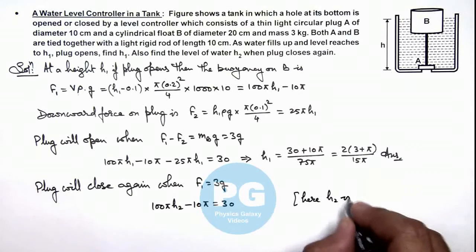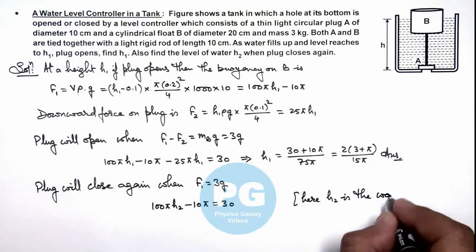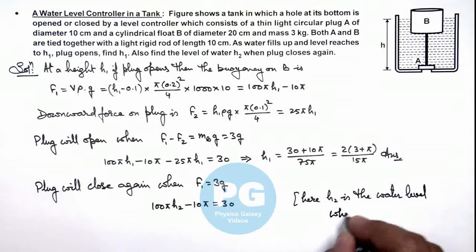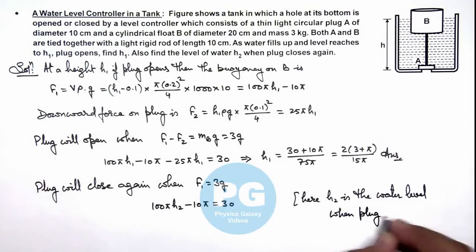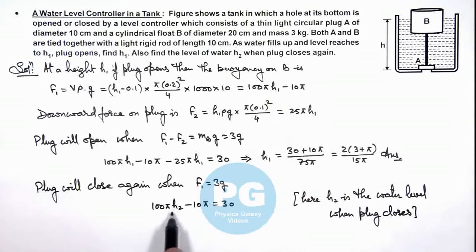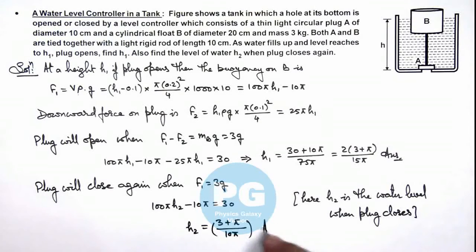h₂ is the water level when plug closes. The same force F₁ we calculated, we replaced h₁ by h₂. On simplifying we get h₂ equals (3 + π)/(10π). And that is the result of this problem.